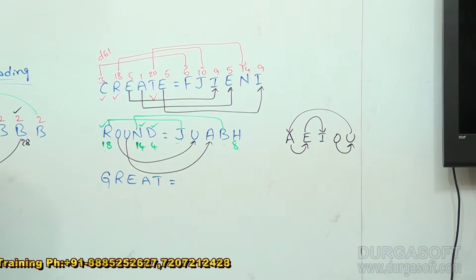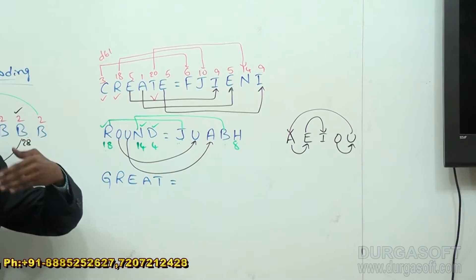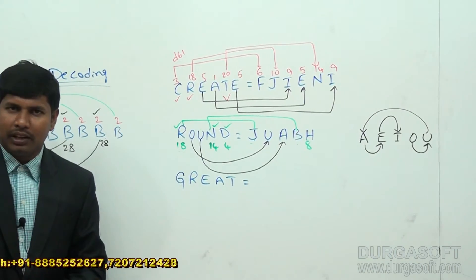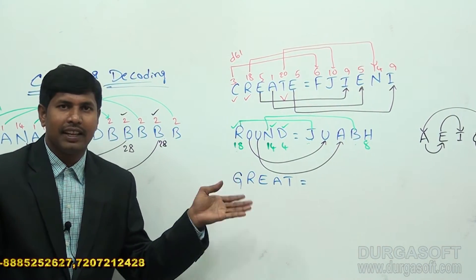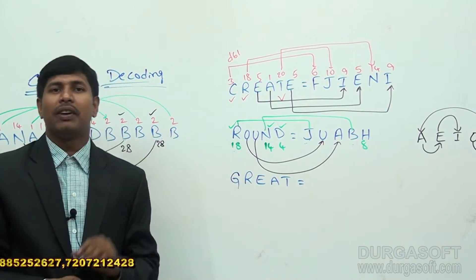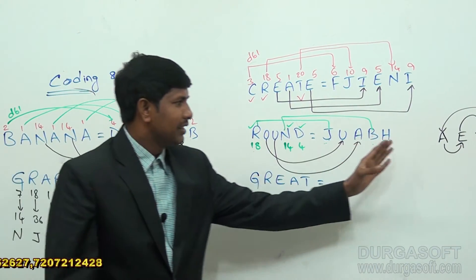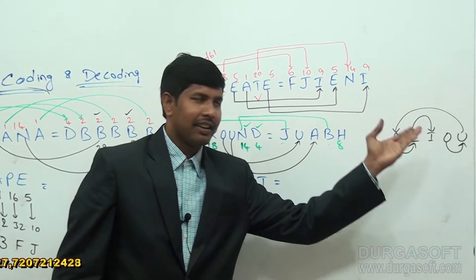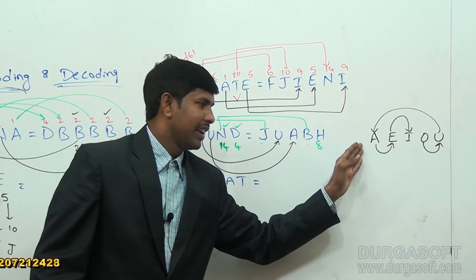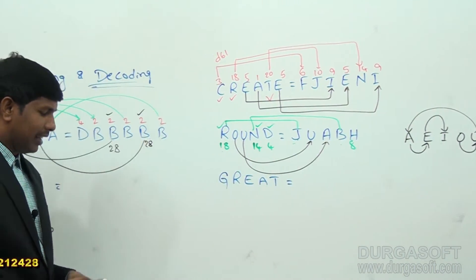From this, what we can understand is: for consonants, we are taking the double values. And for vowels, we are writing the next vowel as the code letter. Simply, we are taking the next vowel every time — U's next is again A, so we take the next letter.